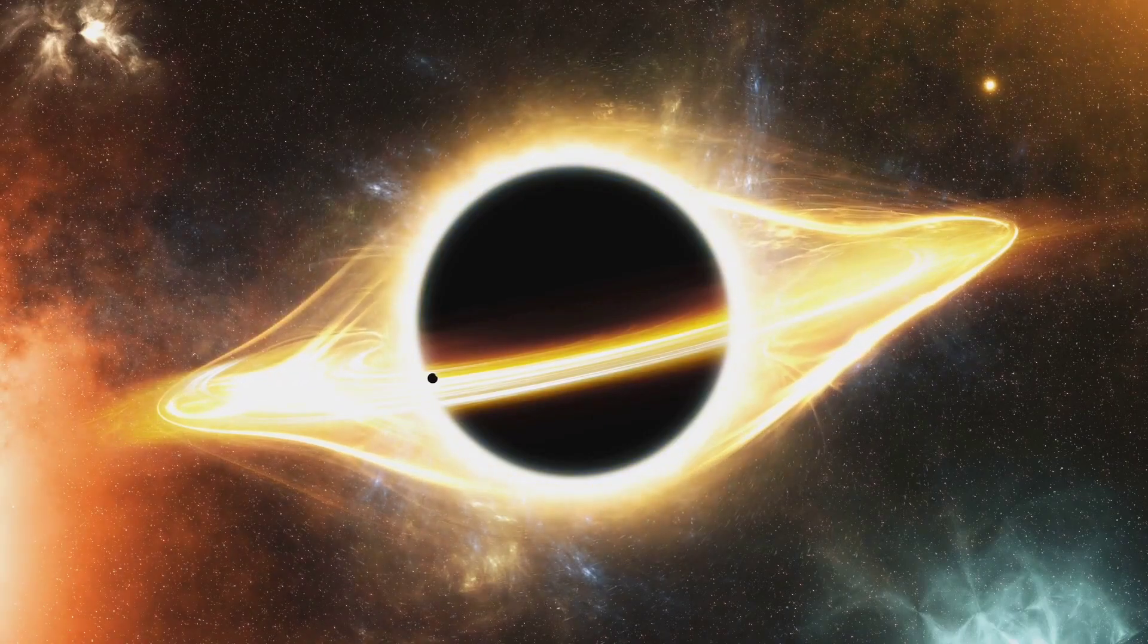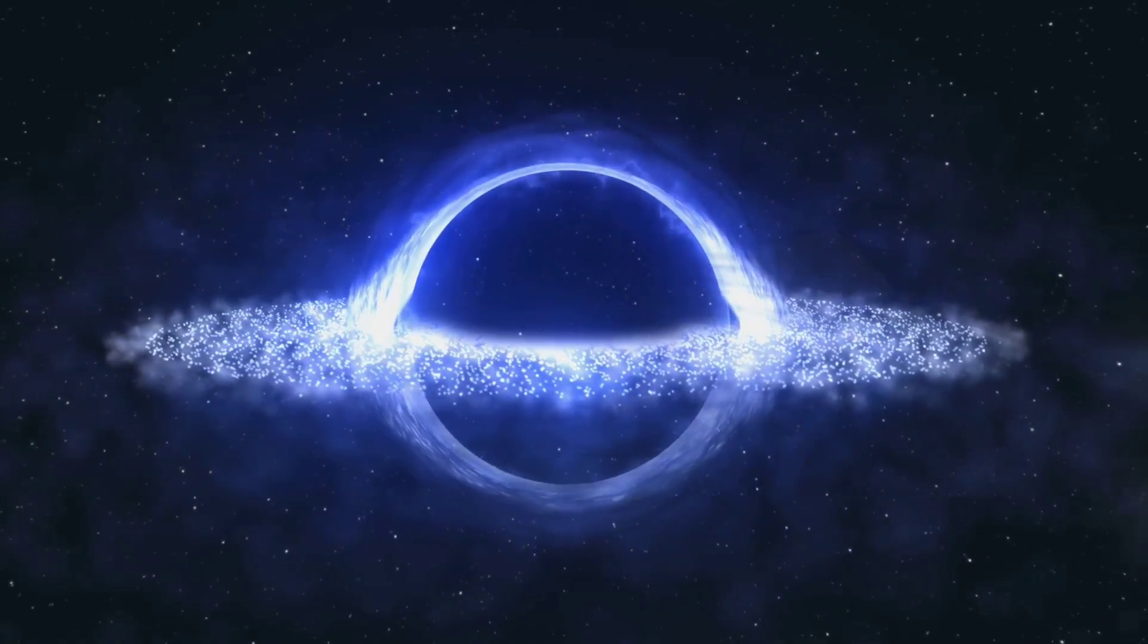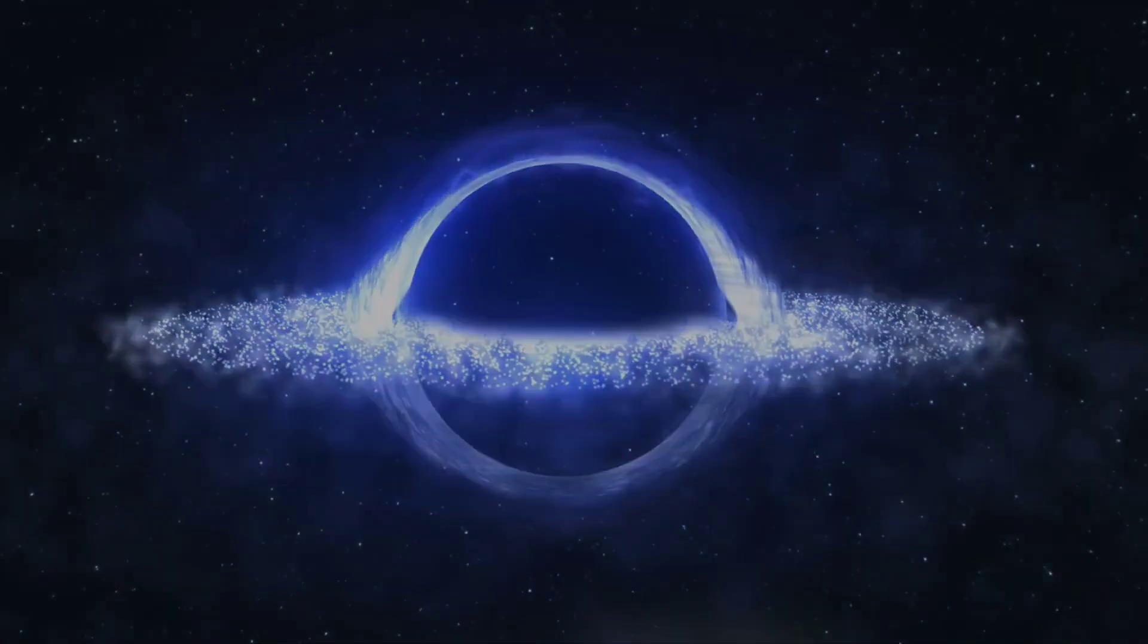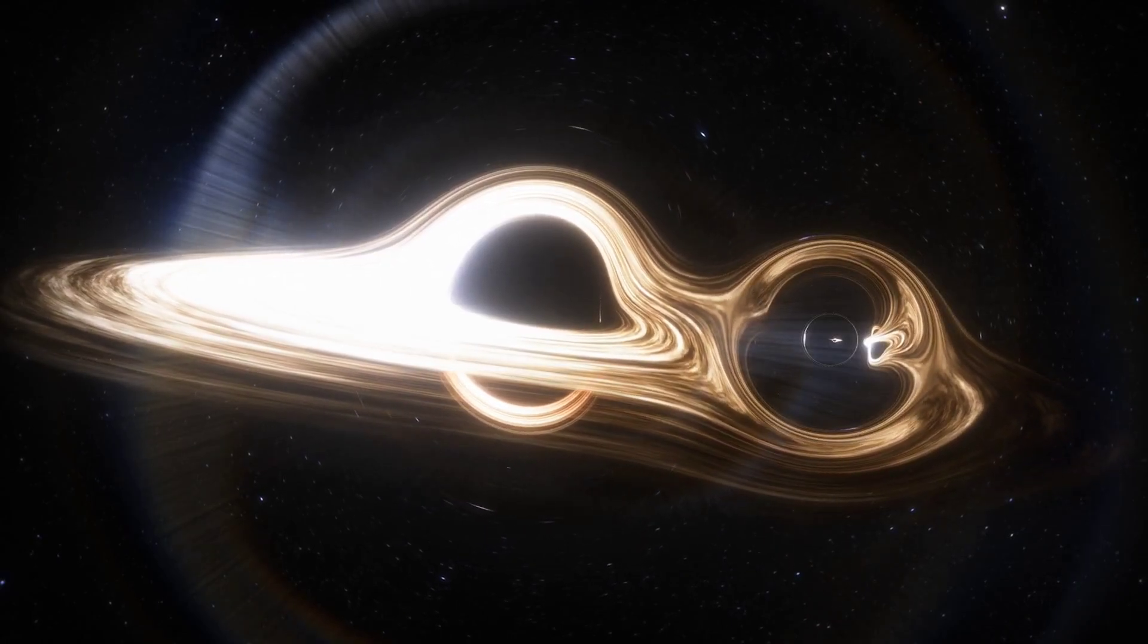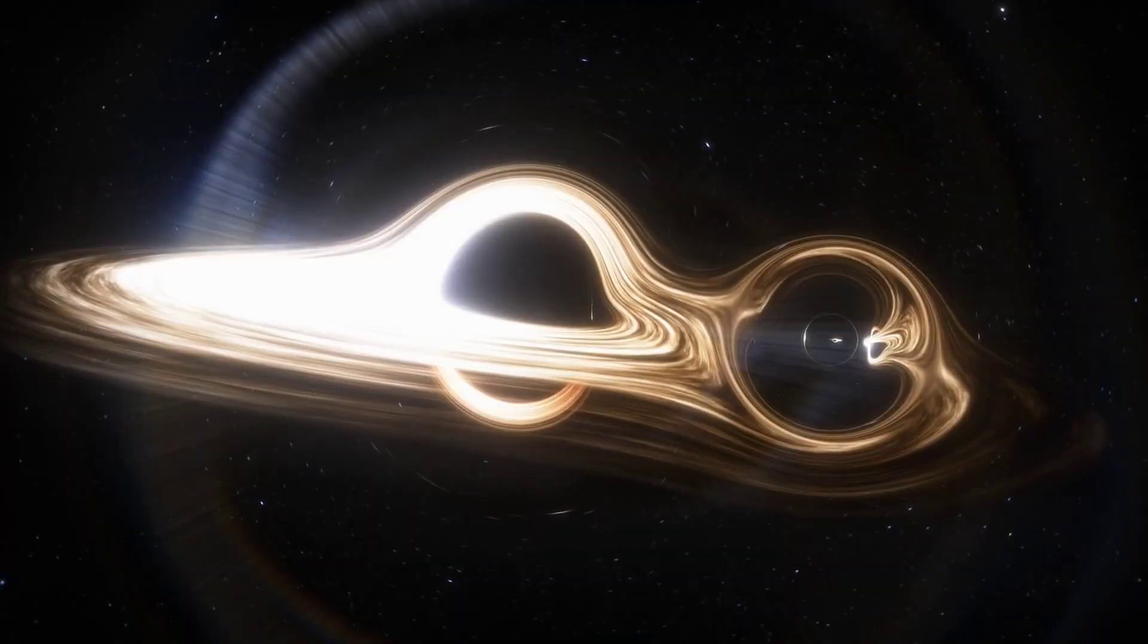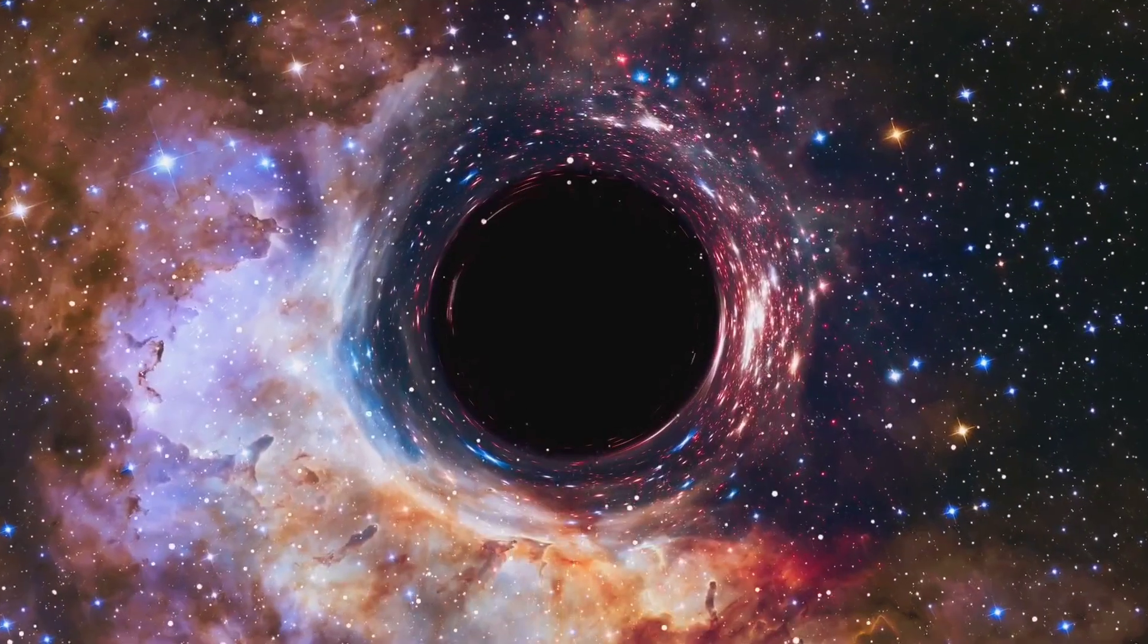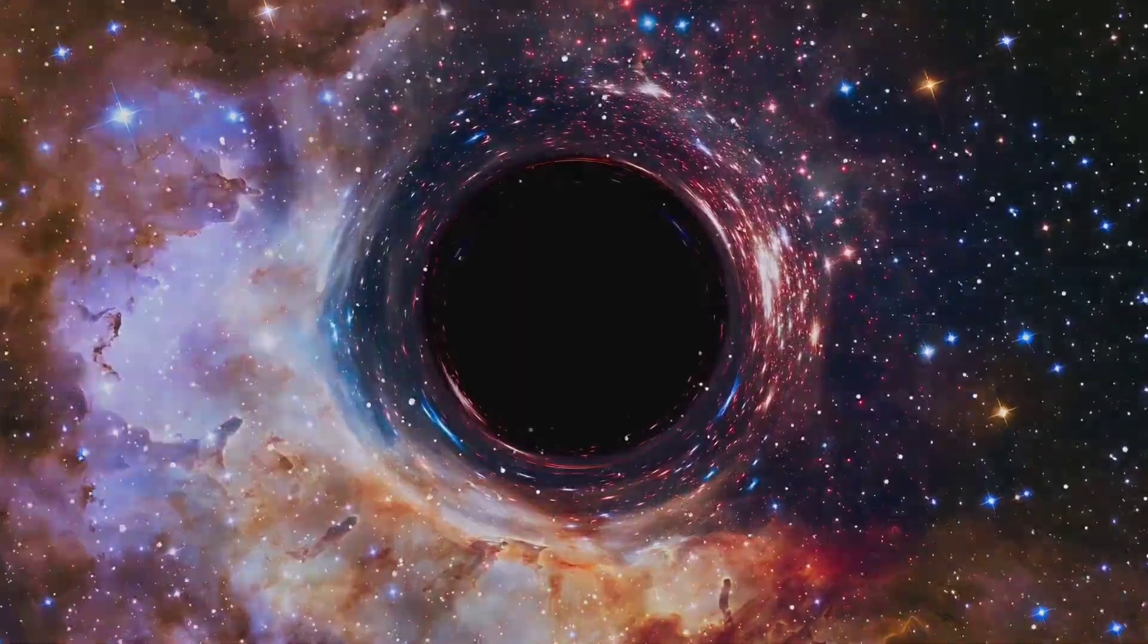Despite its name, a black hole isn't just a dark, empty void. It's actually a region packed with an immense amount of mass squeezed into a tiny space. According to Einstein's theory of relativity, black holes form when a massive star burns out its fuel and collapses. If the remaining core is more than three times the mass of our sun, its gravity becomes unstoppable, crushing it into a single, infinitely dense point.